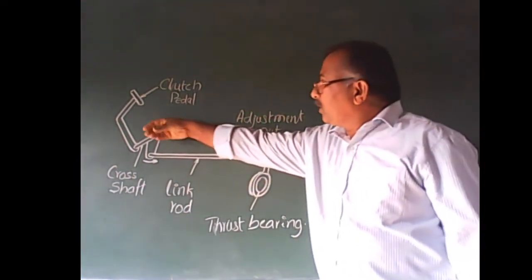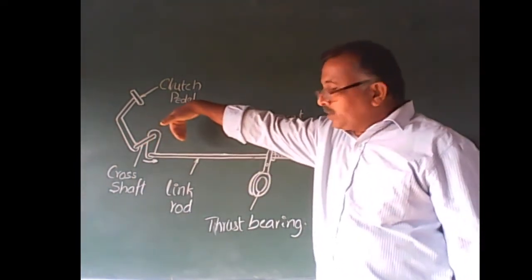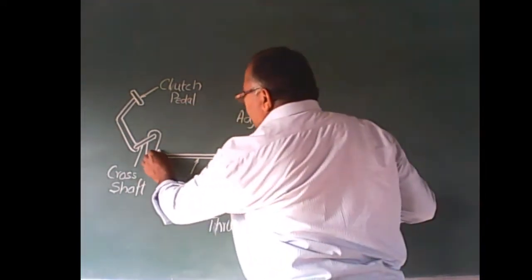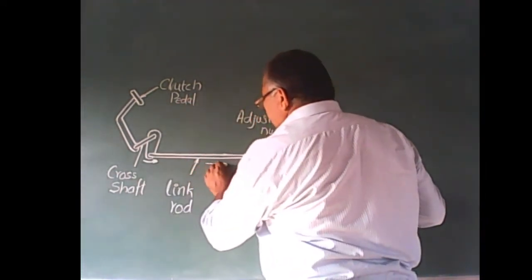When shaft rotates, this one swings backward. When that arm swings backward, link rod moves.